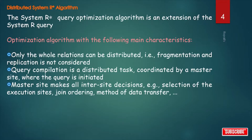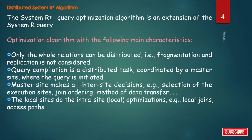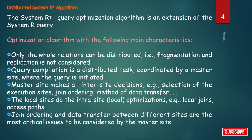The master site makes all inter-site decisions. Inter-site decisions include selection of the execution sites, join ordering, and method of data transfer. Local sites handle intra-query optimization, meaning local optimization such as local joins and access paths. Join ordering and data transfer between different sites are the most critical issues and are considered by the master site.